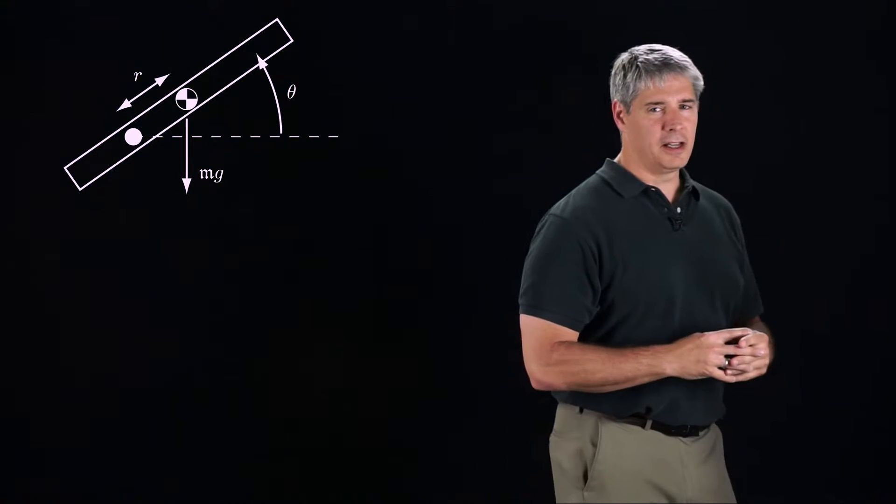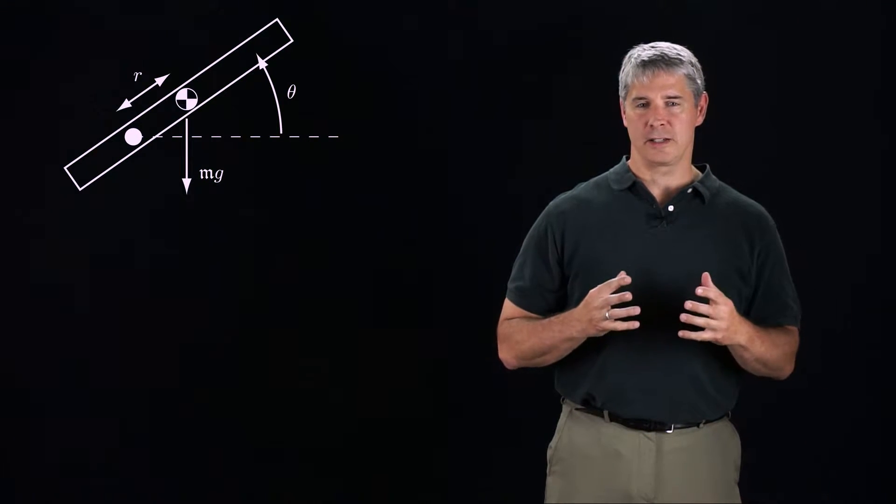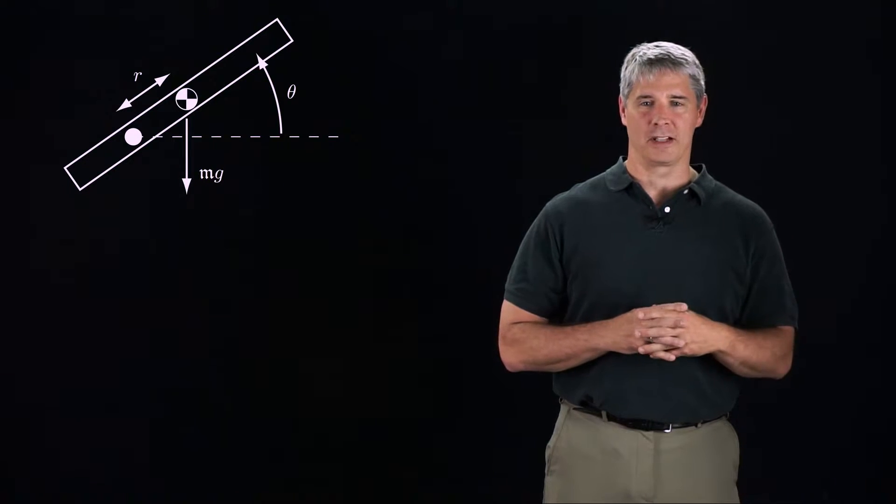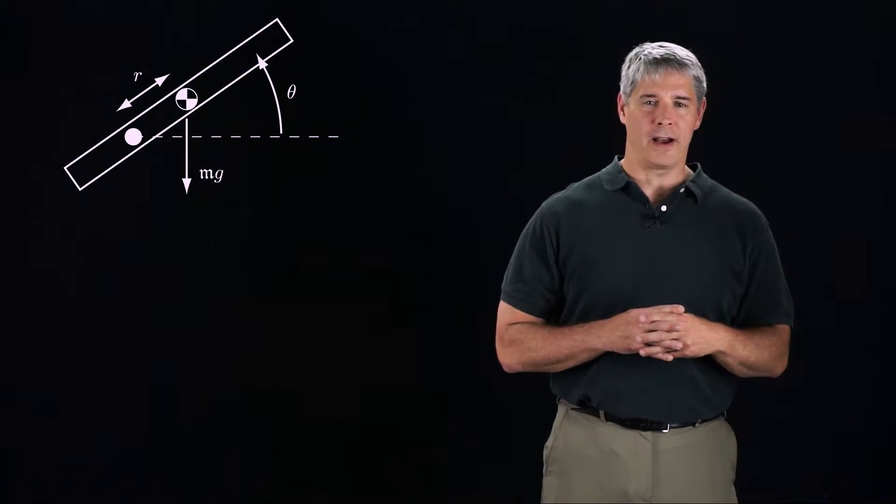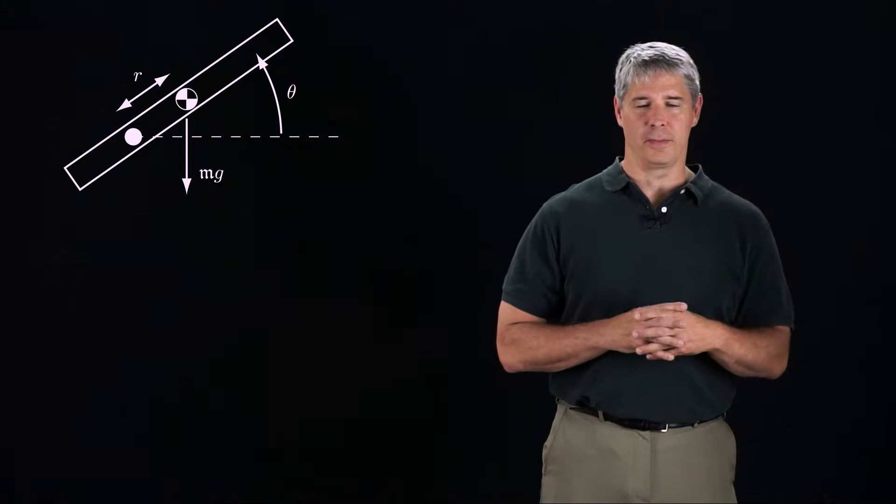We'll again begin by assuming a single-joint robot. It's easy to generalize the results to multi-joint robots. Here is a single-joint robot in gravity. The solid circle is the revolute joint, and the distance between the joint and the center of mass of the link is r. The gravitational force pulling down on the robot is mg.